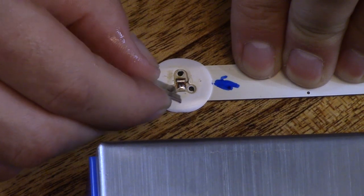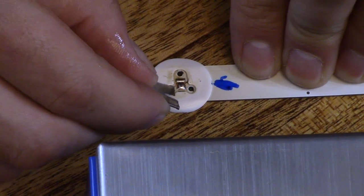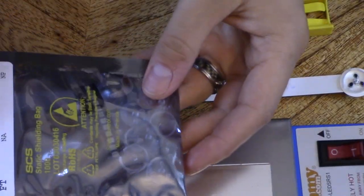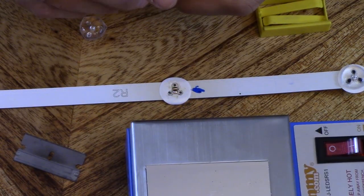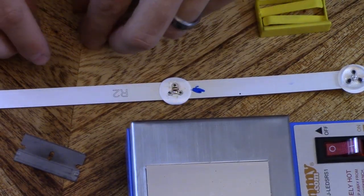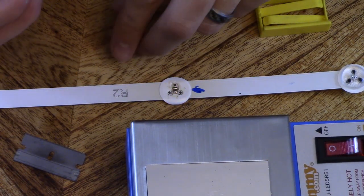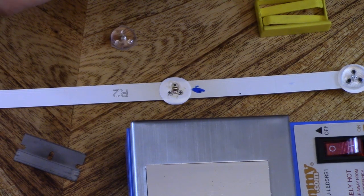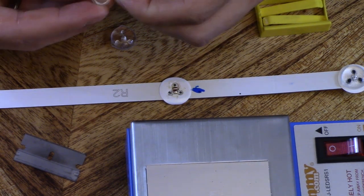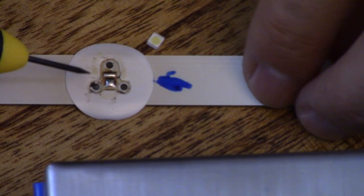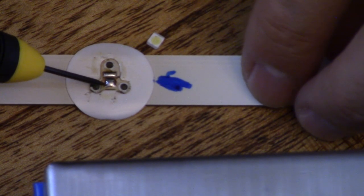You're going to take this and clean the surface right here. Then we're going to take our LEDs. You can use the old diffuser or you can use the new ones. It doesn't really matter. You can use the old ones if you want, but you just have to clean them off.